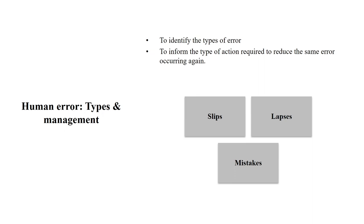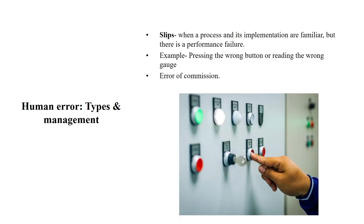Let us understand the types of error. There are three major types: slips, lapses, and mistakes. What is a slip? When a process and its implementation are familiar but there is a performance failure. For example, pressing a wrong button or reading the wrong gauge. This is a type of error called a slip — the process is known, but while performing it, a failure occurs.